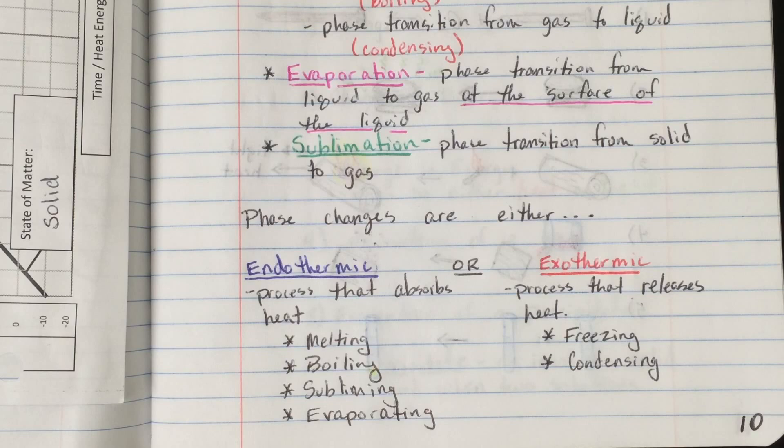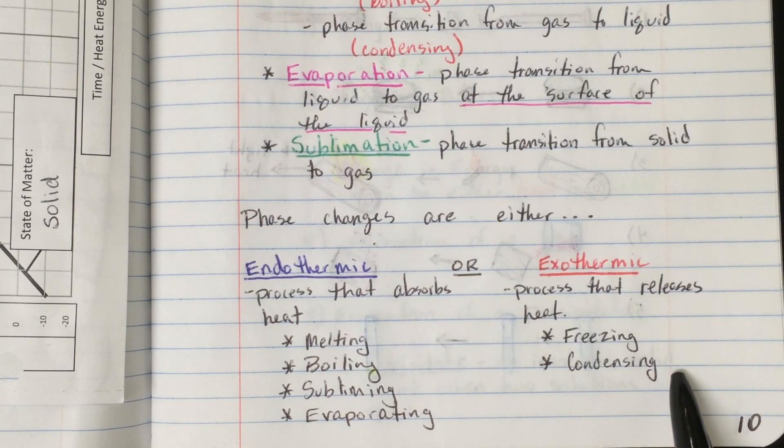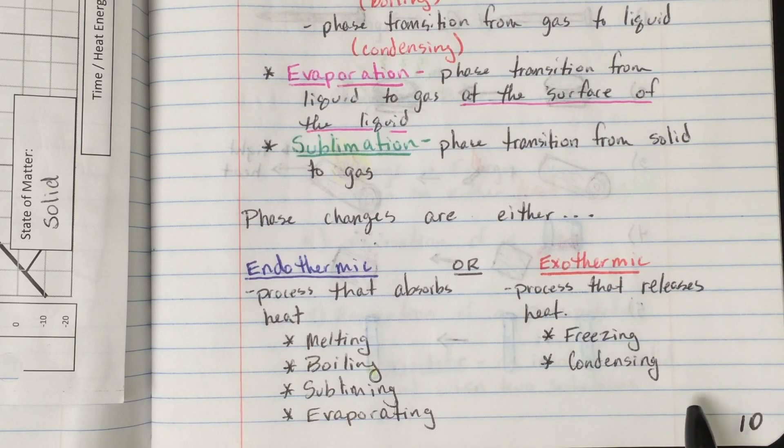We can classify phase changes, or really any physical or chemical change, as being either endothermic or exothermic processes. An endothermic process is a process that absorbs heat, and an exothermic process is a process that releases heat. So our endothermic phase changes are going to be those changes in which we have to add energy, such as melting, boiling, subliming, and evaporating. We have to put energy into the system in order for those phase changes to occur. The exothermic processes will be the ones that release energy, like freezing and condensing, because the substance has to release energy in order to cool down to a more organized state of matter.